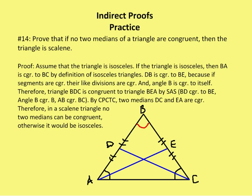Going through it more formally: assume that the triangle is isosceles. If the triangle is isosceles, then BA is congruent to BC by definition of isosceles triangle. DB is congruent to BE, because if segments are congruent, then their like divisions are congruent. And angle B is congruent to itself. Therefore, triangle BDC is congruent to triangle BEA by side-angle-side. By CPCTC, the two medians DC and EA are congruent. Therefore, in a scalene triangle, no two medians can be congruent — otherwise it would be isosceles.